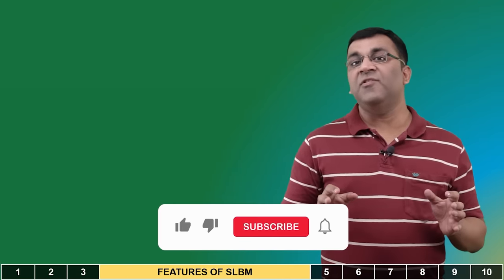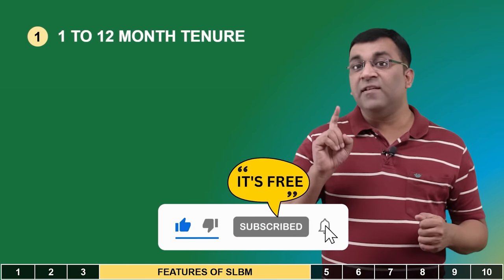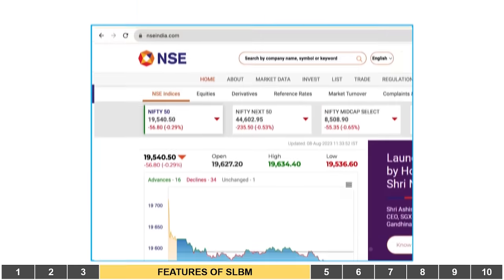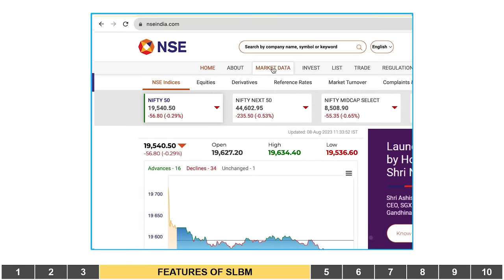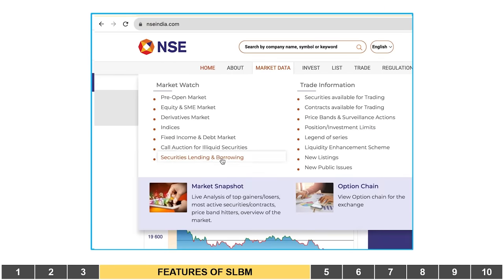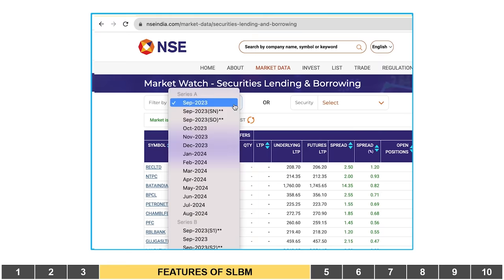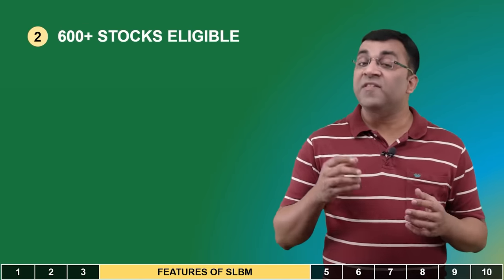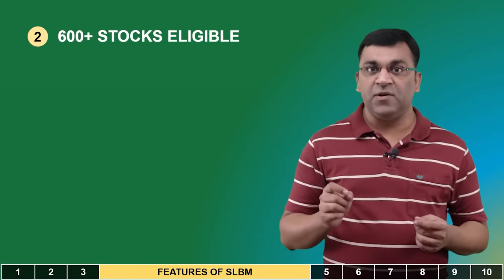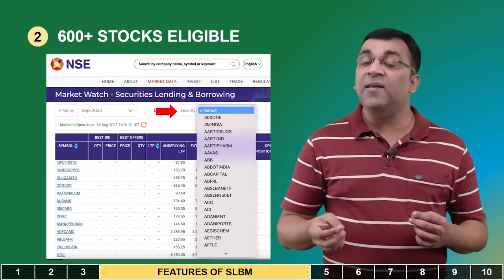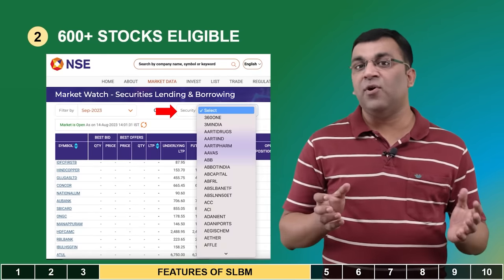When it comes to features, in terms of tenure an SLBM contract can be from 1 month to 12 months. For instance in August 2023, the NSE website under market data — securities lending and borrowing — gives options from September 2023 until August 2024, exactly 12 months. In terms of the number of stocks, over 600 qualify under the SLBM framework, including many A-group stocks, and the list changes monthly with an updated version available on the NSE website.